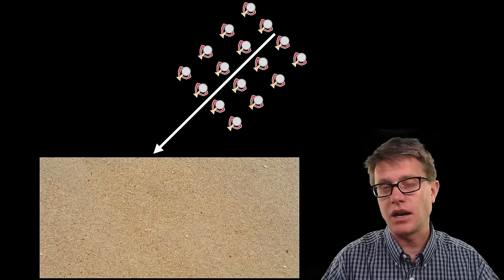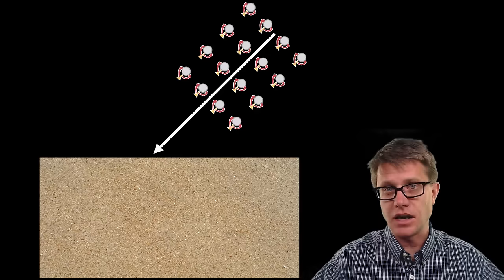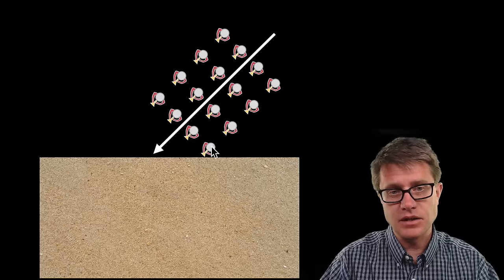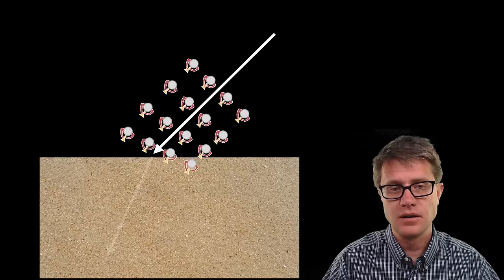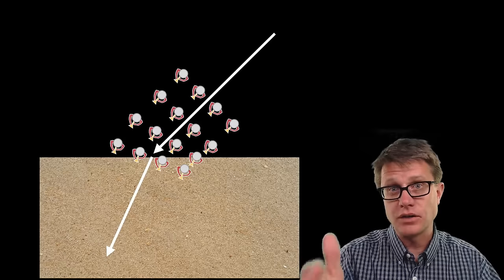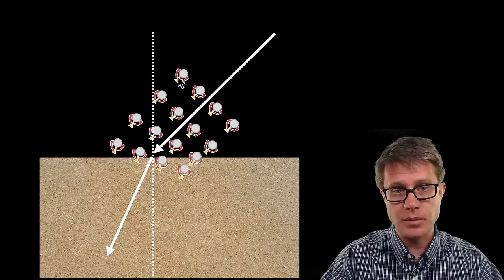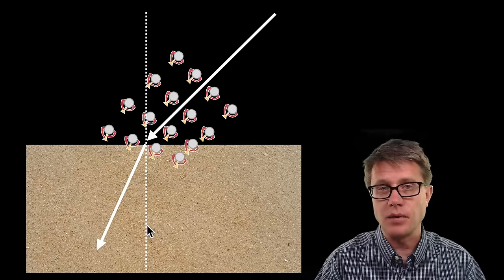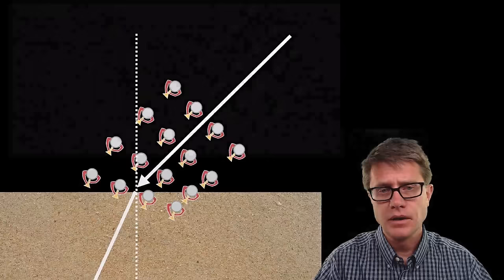Now let's set it up so they are marching in at an angle across a parking lot into sand. Which one is going to start to slow down first? It is going to be the one on the near side. They still keep the distance between all of them the same. Watch what happens as they enter the sand — they bend. We are going from a faster medium to a slower one. Putting in the normal: the angle of incidence is big, and the angle of refraction is small — it is approaching the normal.